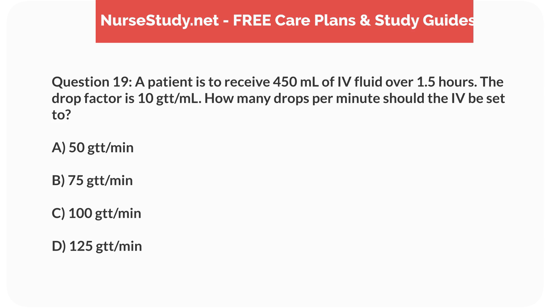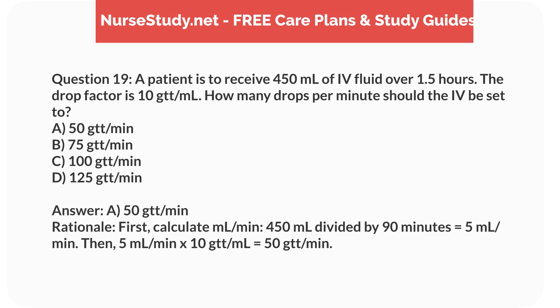Question 19. A patient is to receive 450mL of IV fluid over 1.5 hours. The drop factor is 10 drops per mL. How many drops per minute should the IV be set to? a. 50 drops per minute, b. 75 drops per minute, c. 100 drops per minute, d. 125 drops per minute. Answer: a. 50 drops per minute. Rationale: First, calculate mL per minute: 450mL divided by 90 minutes equals 5mL per minute. Then, 5mL per minute times 10 drops per mL equals 50 drops per minute.